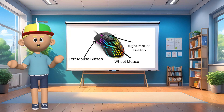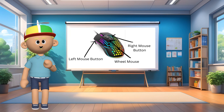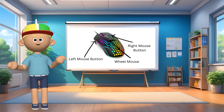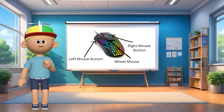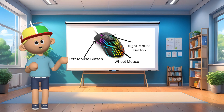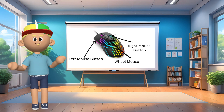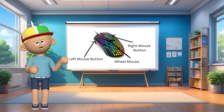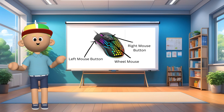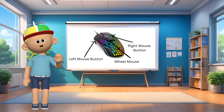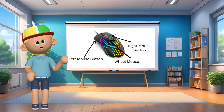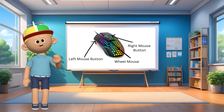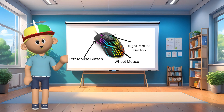So now let's take a look at Mickey the Mouse. Once you start using your mouse, the most used button is the left mouse button, and this button is used to open programs. The right mouse button is used to reveal hidden functions, and the mouse wheel is used to scroll up and down.